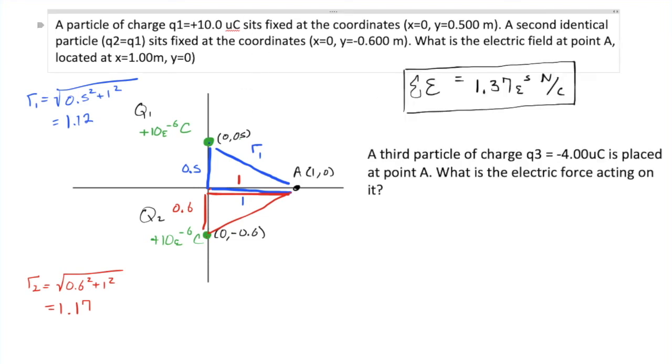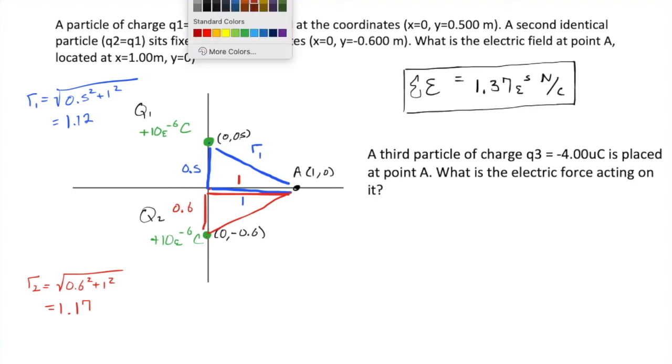There was another part to this problem, and I have placed it on the screen here. It said that a third particle of charge Q3 equals negative 4 microcoulombs is placed at point A. So we can stick a new charge there and call him Q3 at negative 4, remember, times 10 to the negative 6 regular coulombs. And the question is, what is the electric force acting on it?